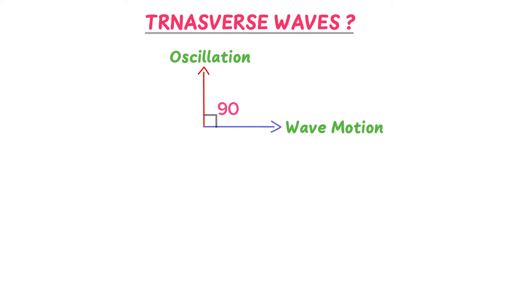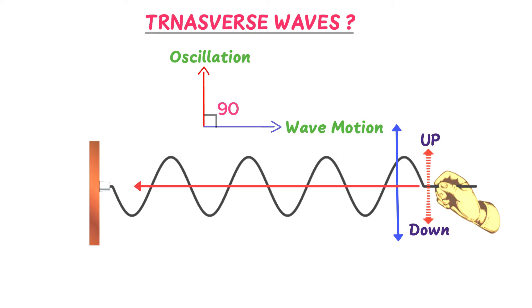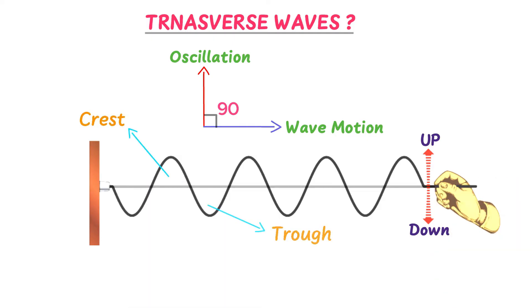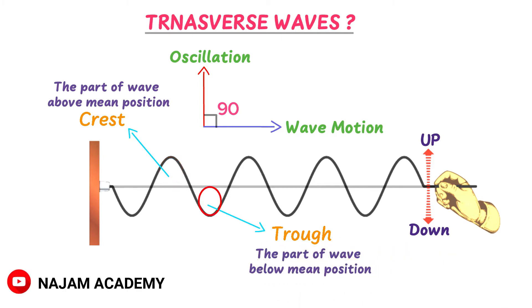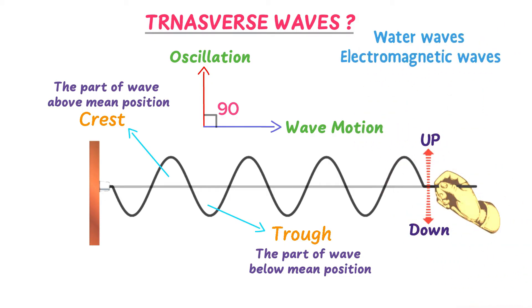For example, consider the waves produced in a slinky spring. Your hand moves up and down in the y direction while the waves move in the x direction, so it is an example of transverse waves. Transverse waves are made of consecutive crests and troughs. The part of the wave above the mean or equilibrium position is called a crest, while the part below is called a trough. Examples of transverse waves are water waves and electromagnetic waves such as x-rays, radio waves, and light waves.